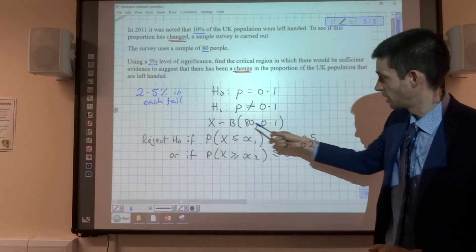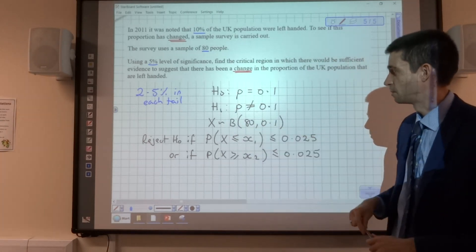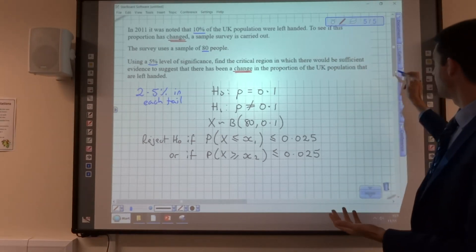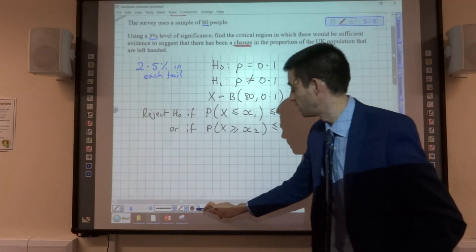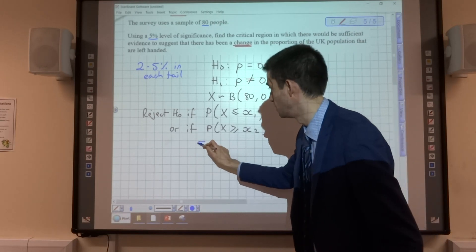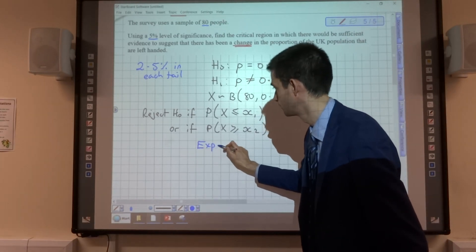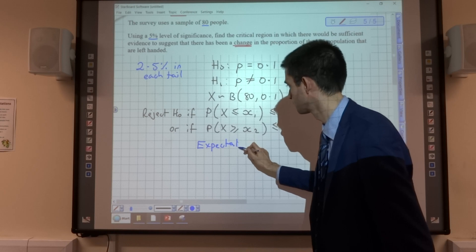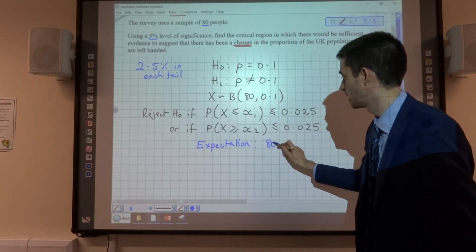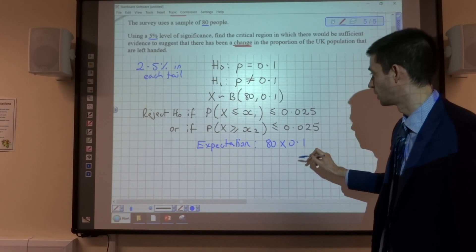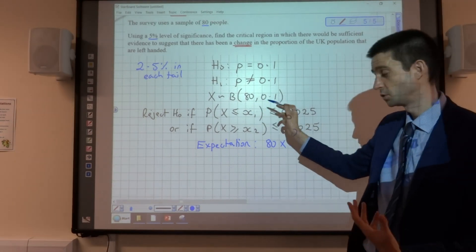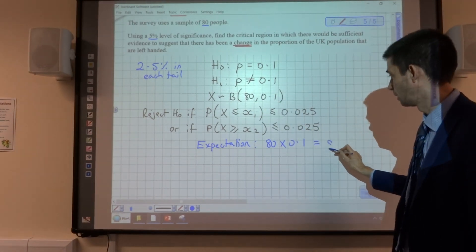So we're going to use this binomial distribution, X follows the binomial 80, 0.1, and again, as before, we're going to have a think about what our expected value is, our expectation, because our expectation is going to be 80 times by 0.1, so the number in the sample times the probability, which is 8.